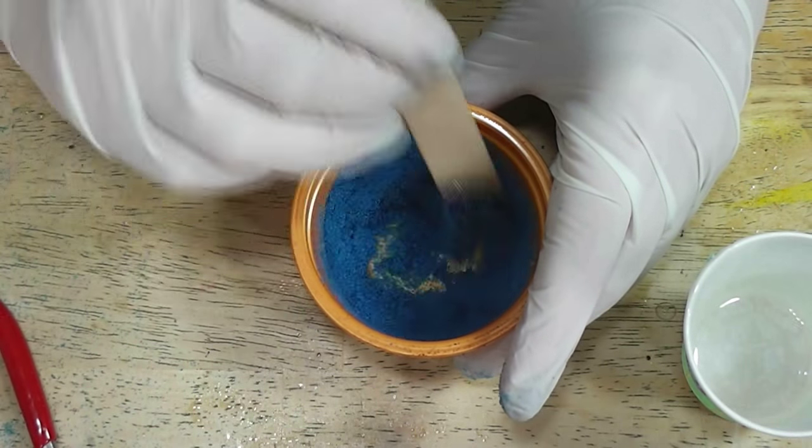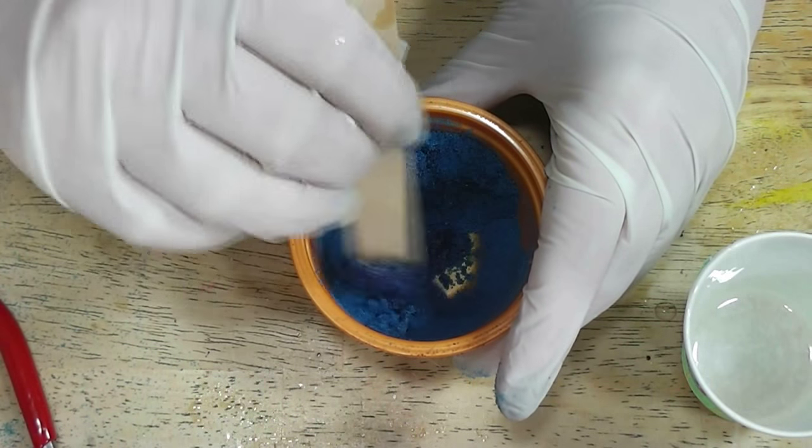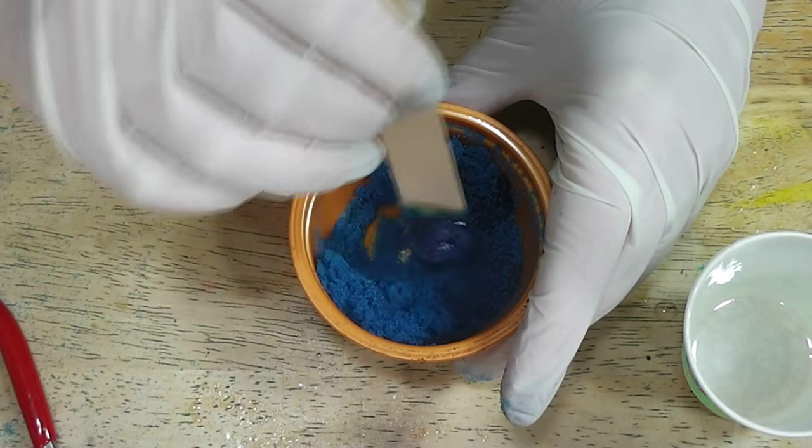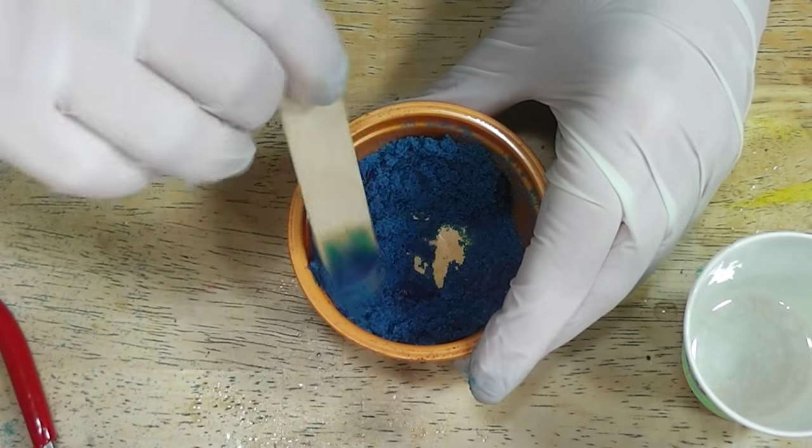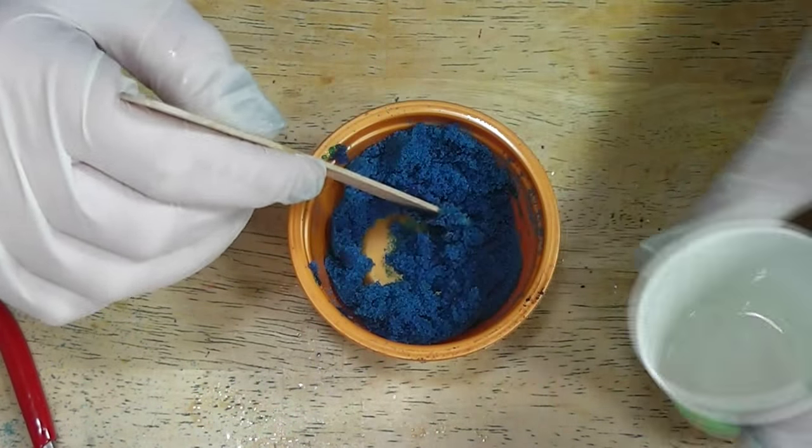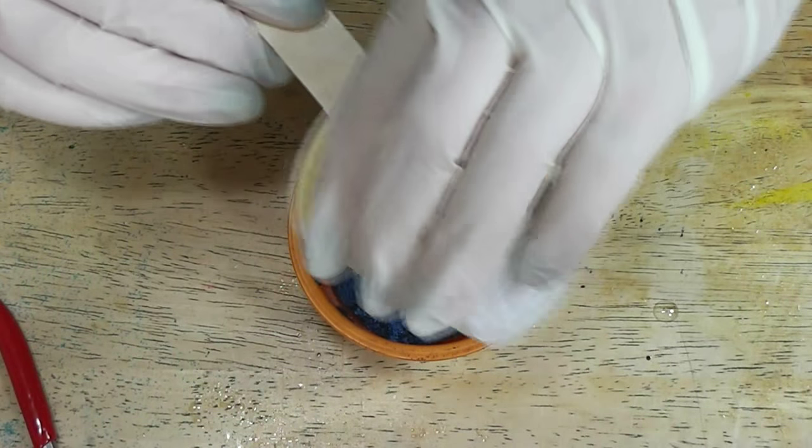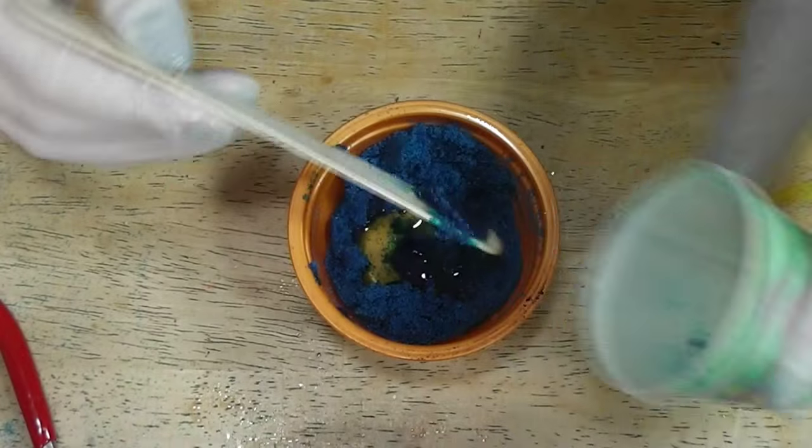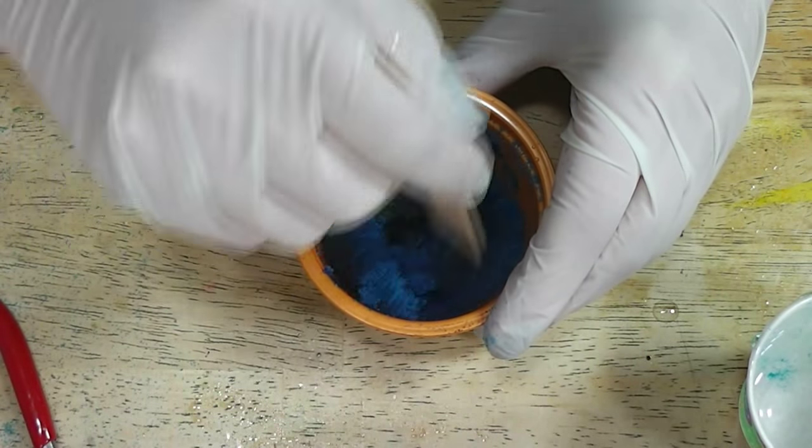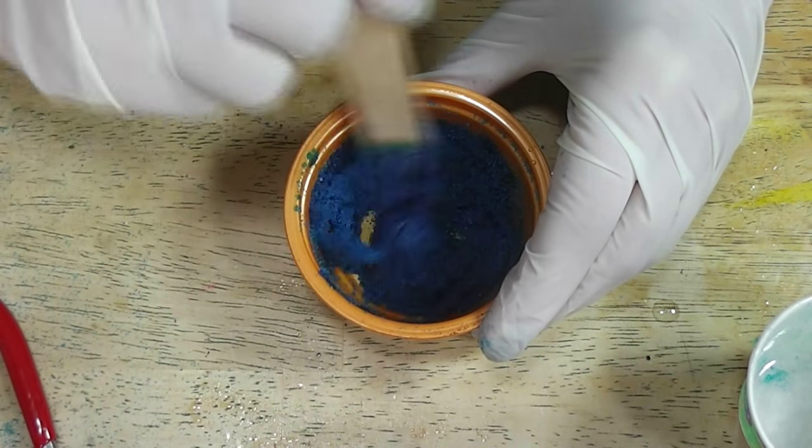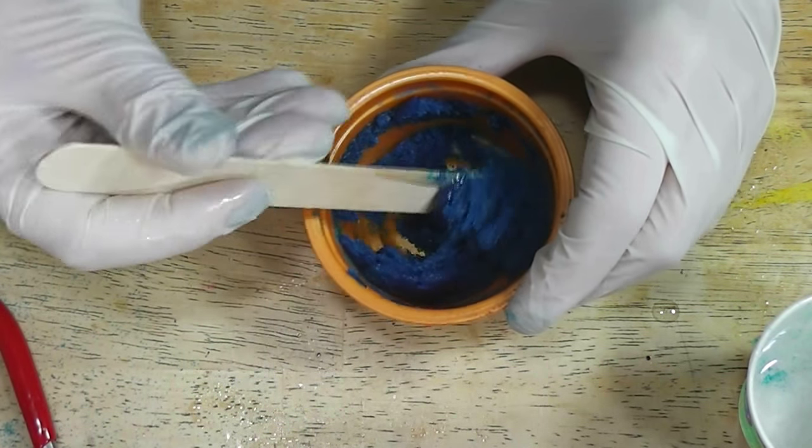You want this pretty thick. The thicker you make it, the more of a mound shape you can put on it so it will look more like the slushies or icies from the convenience store. The wetter it is, the more flat it will be. That's a pretty good consistency.